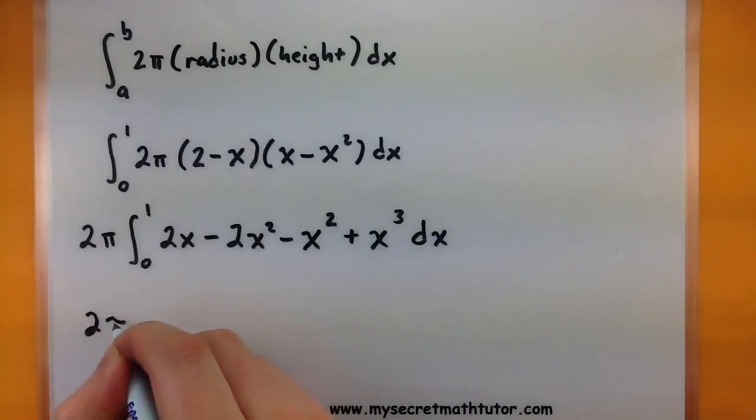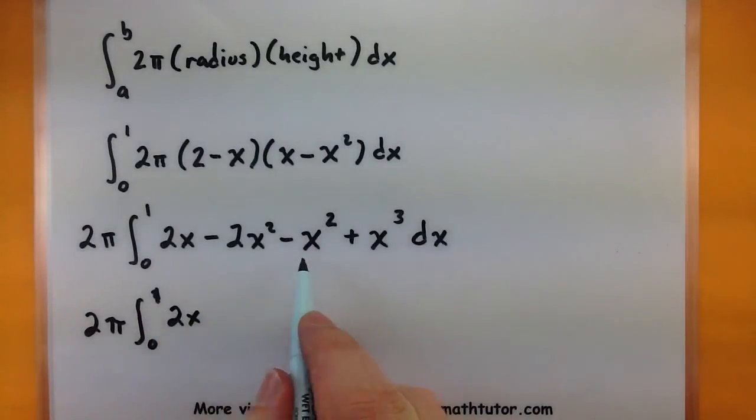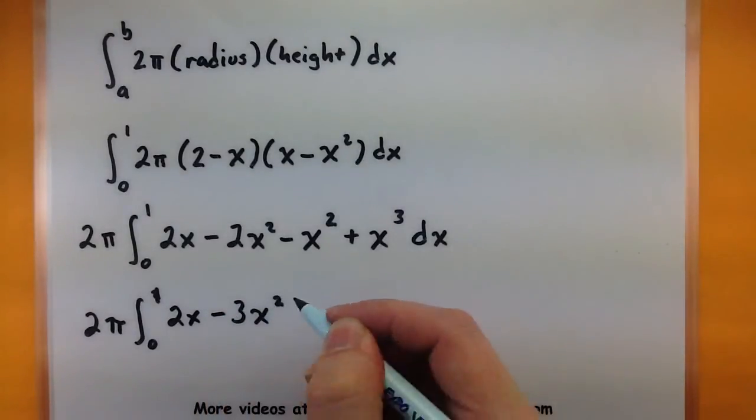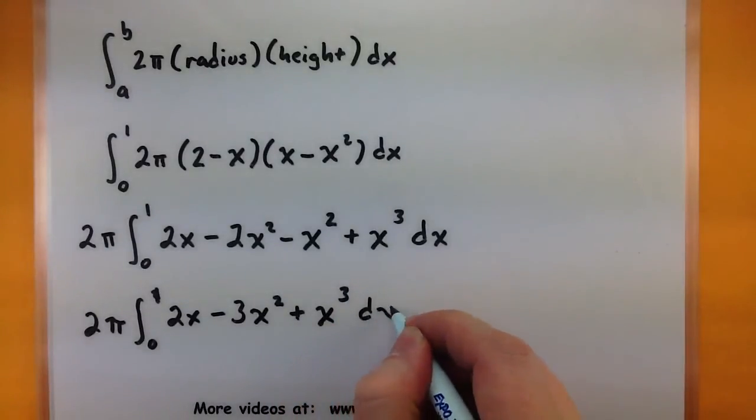So let's see. We've got our 2 pi out front. 0 to 1. 2x. This would be minus 3x squared plus x cubed dx.